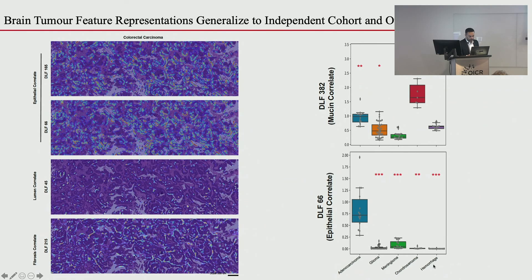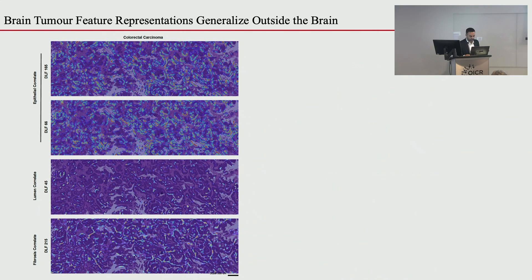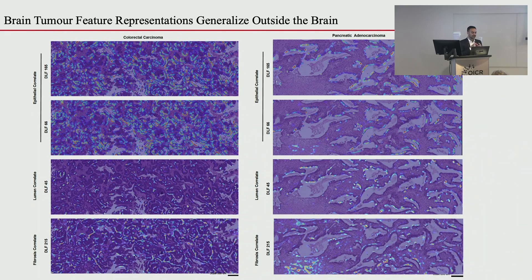We validated this on an independent cohort: feature 382 is high in chondrosarcomas as seen in training, and much higher than other tumors. The epithelial feature is very high in adenocarcinomas and low in other tumor types in our test set. Importantly, features like blood and fibrosis can be dialed to zero if you're not interested in them, allowing you to cluster the data using only hand-selected features of interest. And because we know what these features represent, we can translate them to tumors the network was never trained on — for example, pancreatic adenocarcinoma from a colleague shows the epithelial features labeling the epithelium, luminal features labeling luminal components, and fibrosis features labeling the fibrotic components as expected.